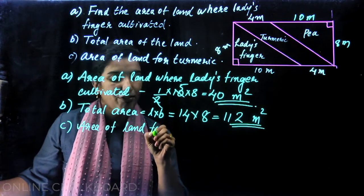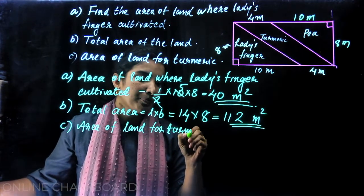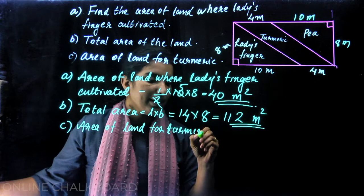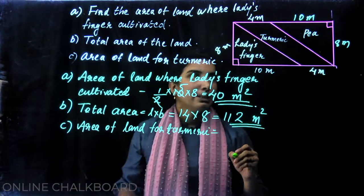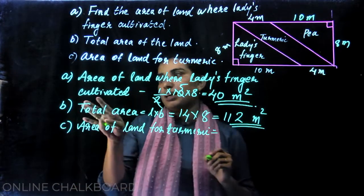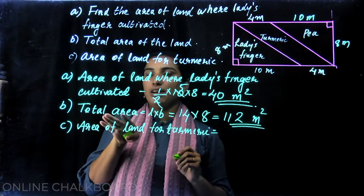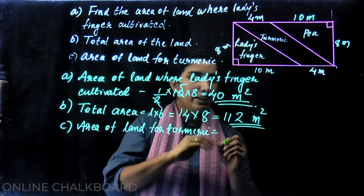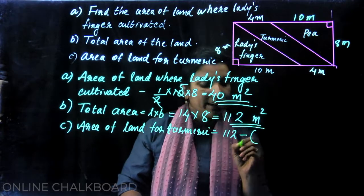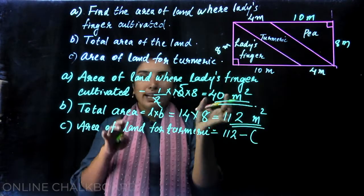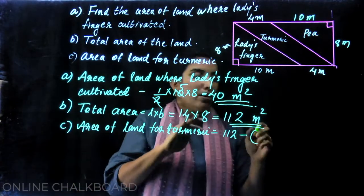The area of land for turmeric is equal to the calculated value. The total area is 112. The area of ladies finger is equal to 40.